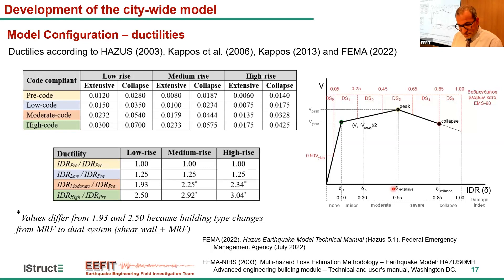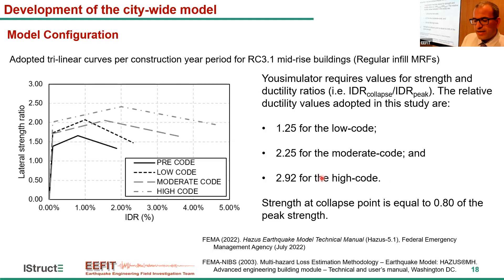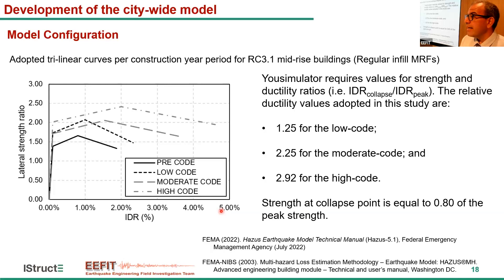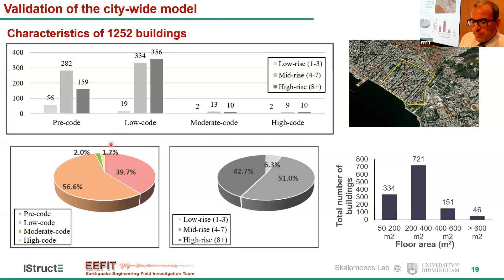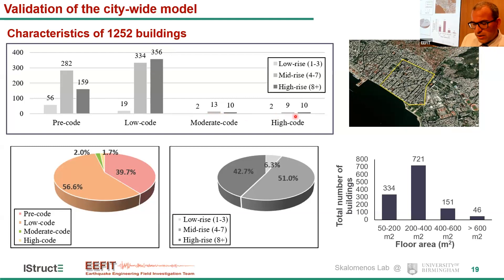To give an idea, a comparison for mid-rise buildings shows the trilinear curves used in the U-Simulator for pre-code, low-code, moderate-code, and high-code buildings — with lateral strength ratio on the vertical axis and IADR on the horizontal axis — illustrating the different ductility and strength of each building under each design regulation. The study examined 1,252 buildings in the metropolitan area. The majority are pre-code and low-code, reflecting that main construction activity in Thessaloniki occurred in the 1970s and 1980s, with very few moderate and high-code buildings. The center of Thessaloniki consists mainly of mid-rise and high-rise buildings.